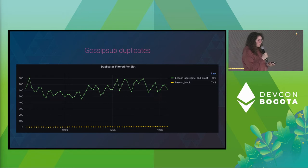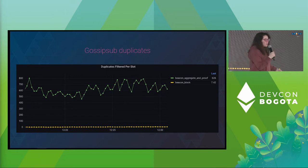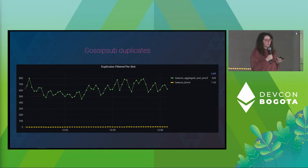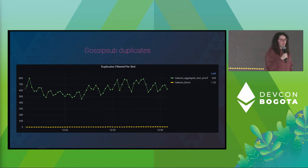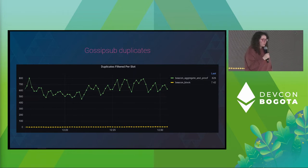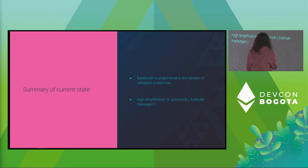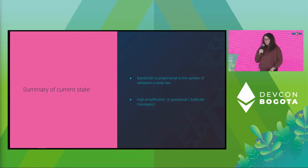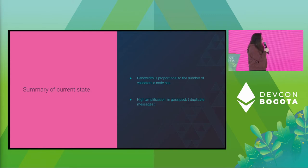Here's real data on GossipSub duplicates for our nodes. Focus on the beacon block topic — we know we need to publish one block each slot, so we're supposed to receive a single unique message per topic. However, we are getting six or seven messages across the network — that's an amplification factor of about seven. Imagine what happens if we were able to reduce those duplicates — that's a huge gain. So to summarize the current state: bandwidth is proportional to the number of validators a node has, and there's high amplification in GossipSub. How are we going to reduce duplicates without harming the network?